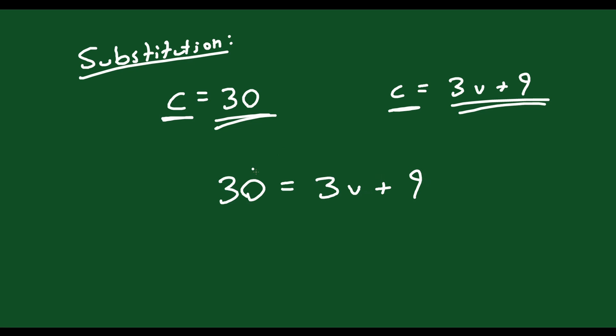So let's solve for V. Bring the 9 over here. 30 minus 9 equals 3V. 30 minus 9 is equal to 21. Divide both sides by 3 to get V by itself.